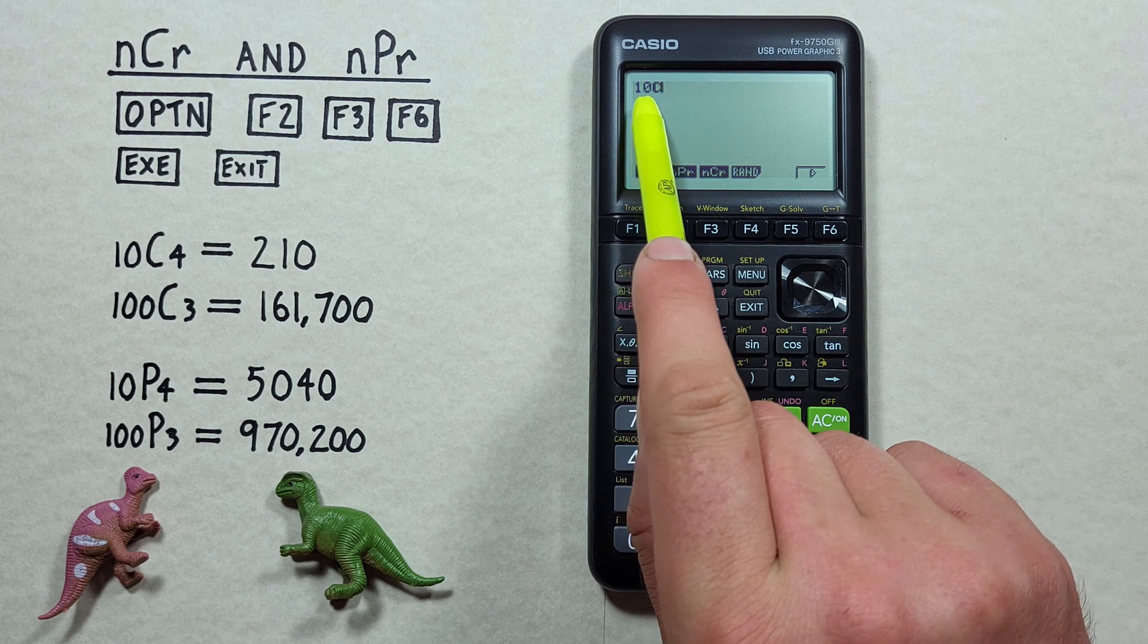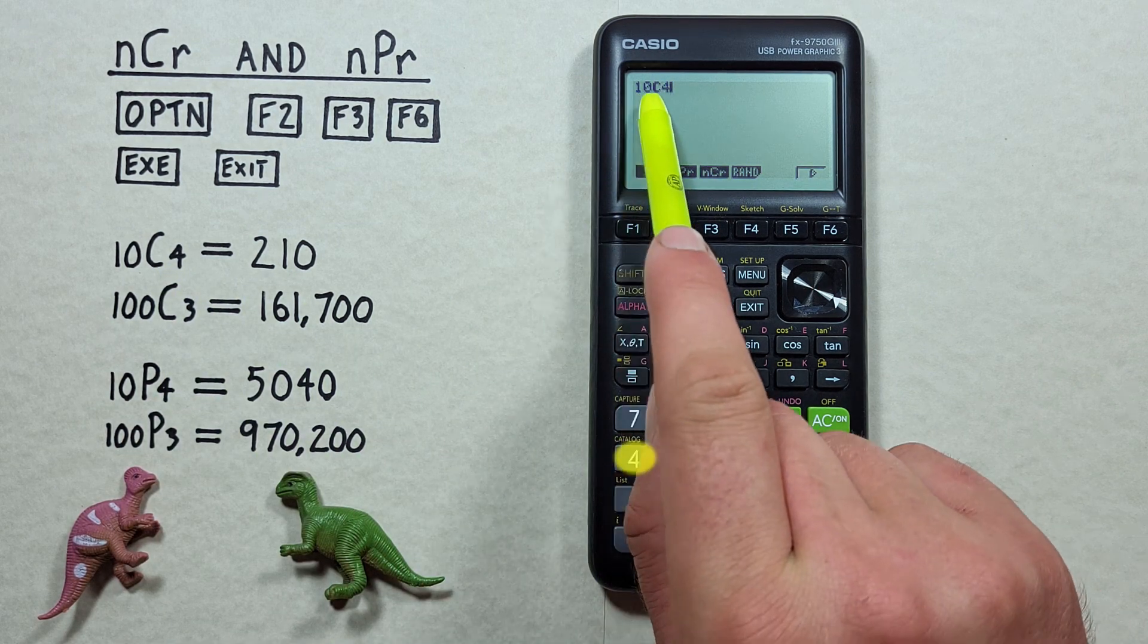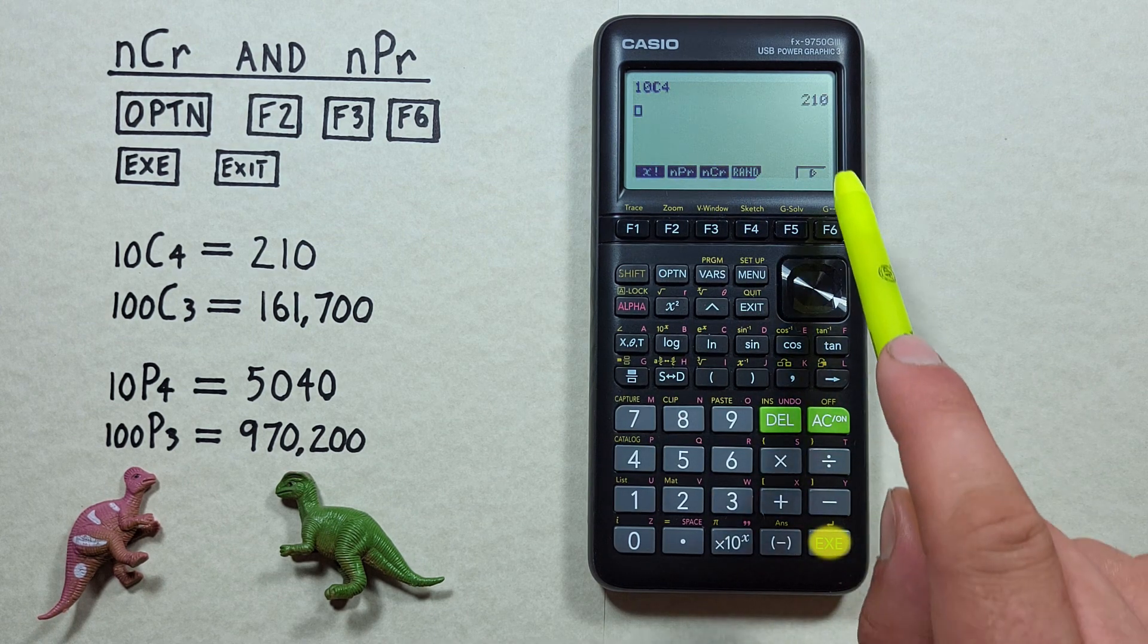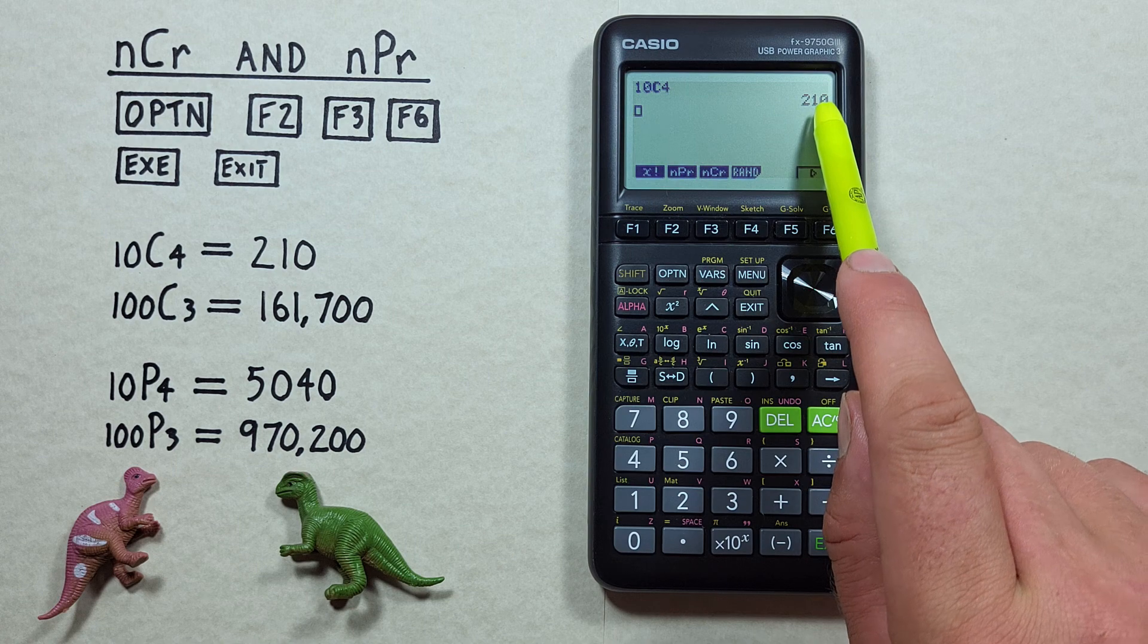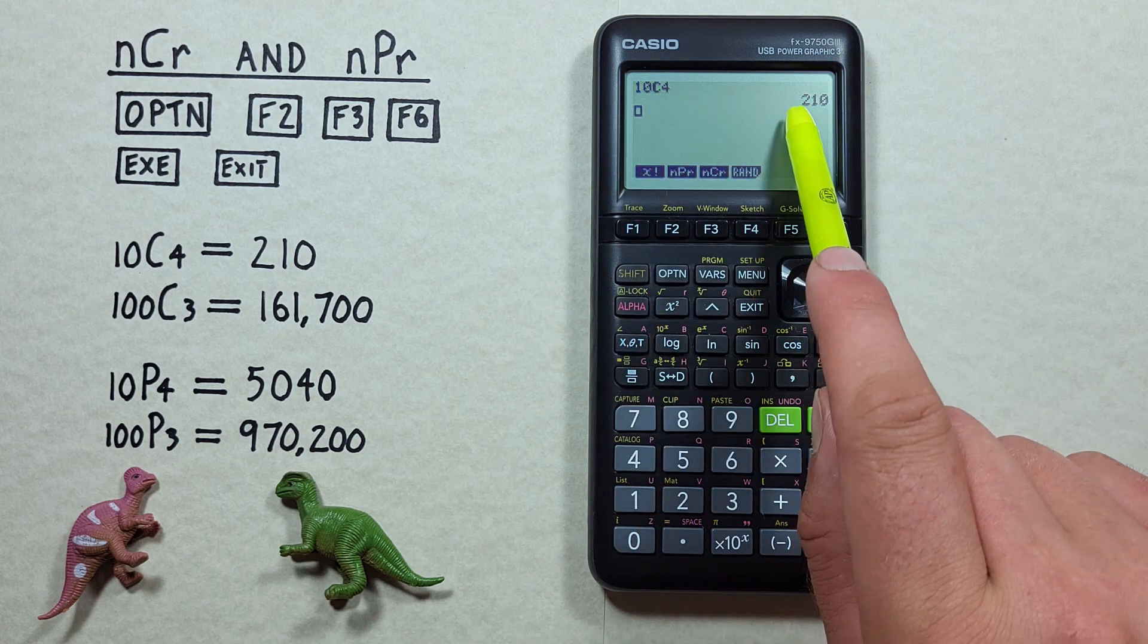We see the C appear on our screen. Now we have 4, because we're choosing 4 objects, and we press the EXE key. And we get a result of 210. So 10 choose 4 is equal to 210.